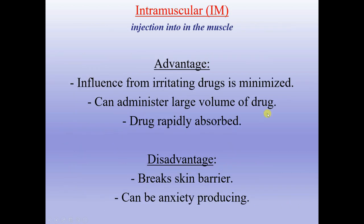Intramuscular route is injection into the muscle. Advantages: influence from irritating drugs is minimized, can administer large volumes, and drug is rapidly absorbed. Disadvantages: breaks skin barrier and can be anxiety-producing.